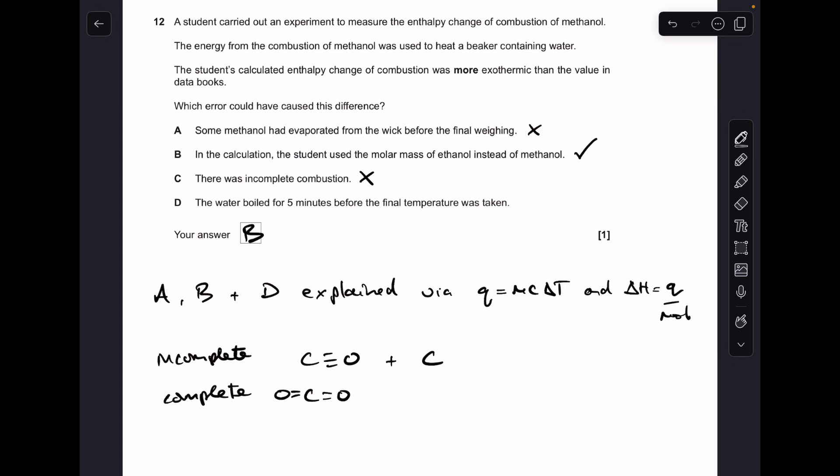And the last one, back to Q equals MC delta T, the Q value is going to be the same because the temperature's basically stuck at 100 degrees C while it's boiling for those five minutes, but they're still burning fuel, so the Q value is going to be being divided by a larger value for moles, so that's going to make delta H lower or less exothermic, which is why D was wrong.